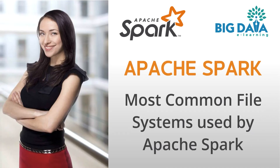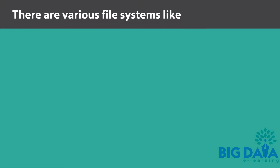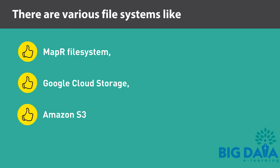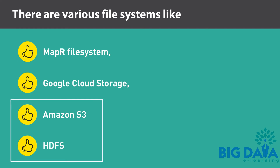Most common file systems used by Apache Spark. There are various file systems like MapR File System, Google Cloud Storage, Amazon S3, and HDFS that Spark can use to read and store data. In this video, we're going to look at the two most commonly used file systems, which are HDFS and Amazon S3.